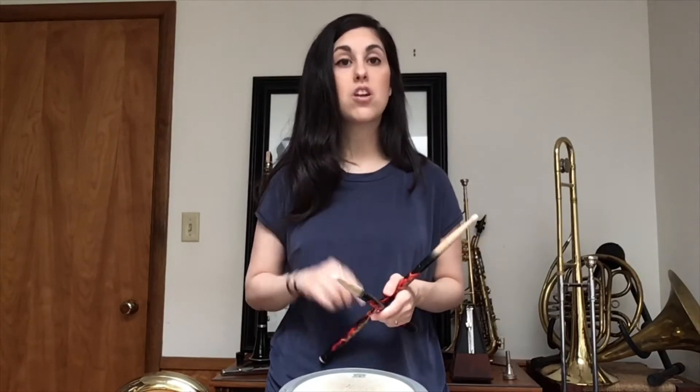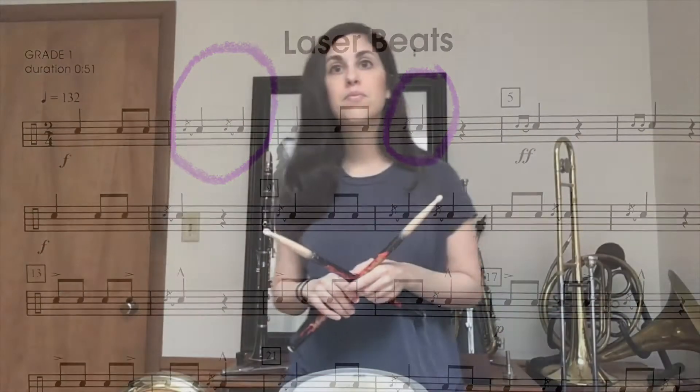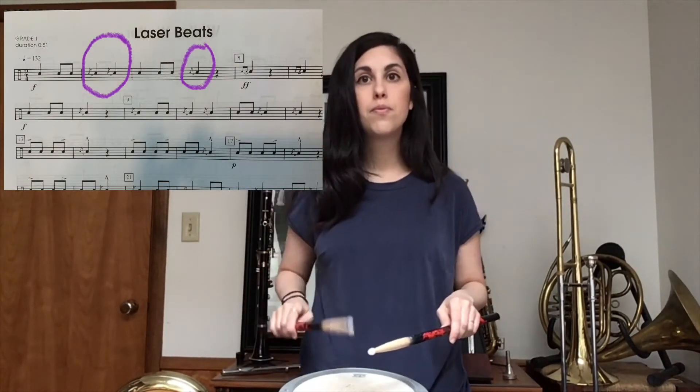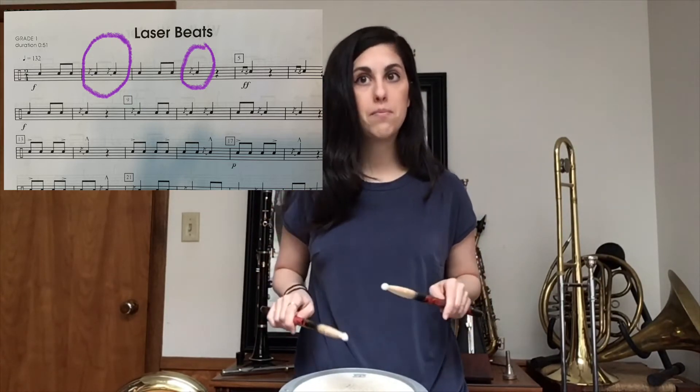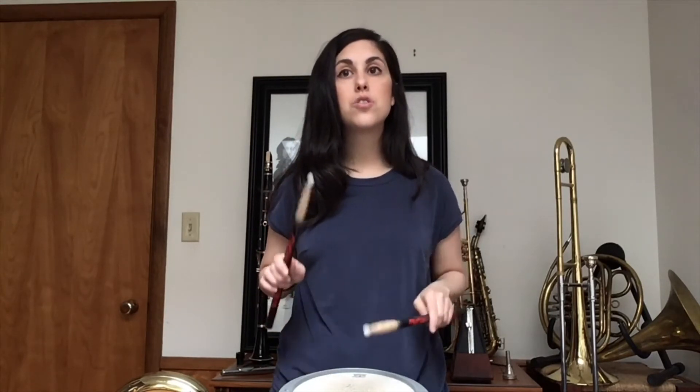The first rudiment I want to go over in the song are flams. That occurs in the second measure. Here's what it should sound like: flam, flam, ta, ti, ti, flam, rest. So those were the first four measures. If we were going to give those numbers, it would be: one, two, and one, two, one, two, and one. The flam occurs within one beat.